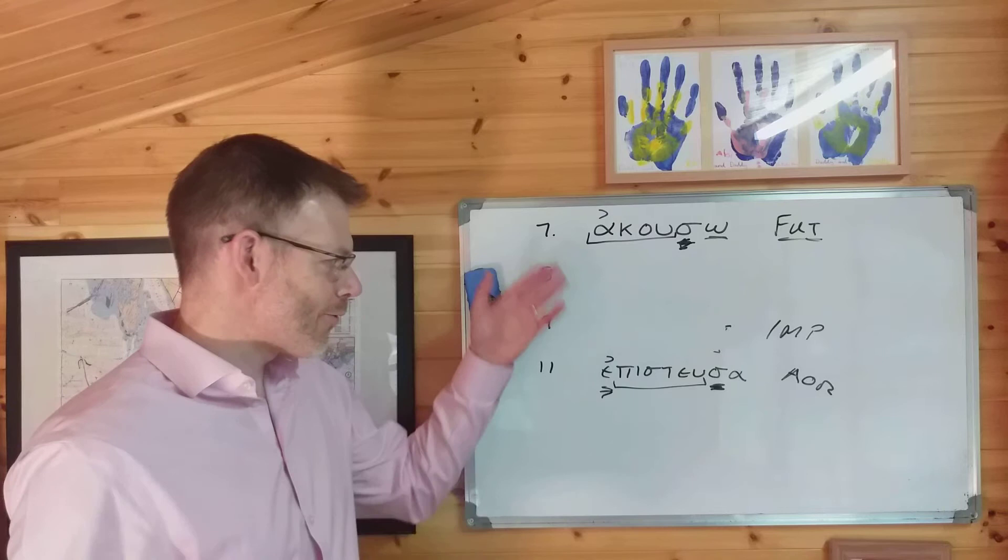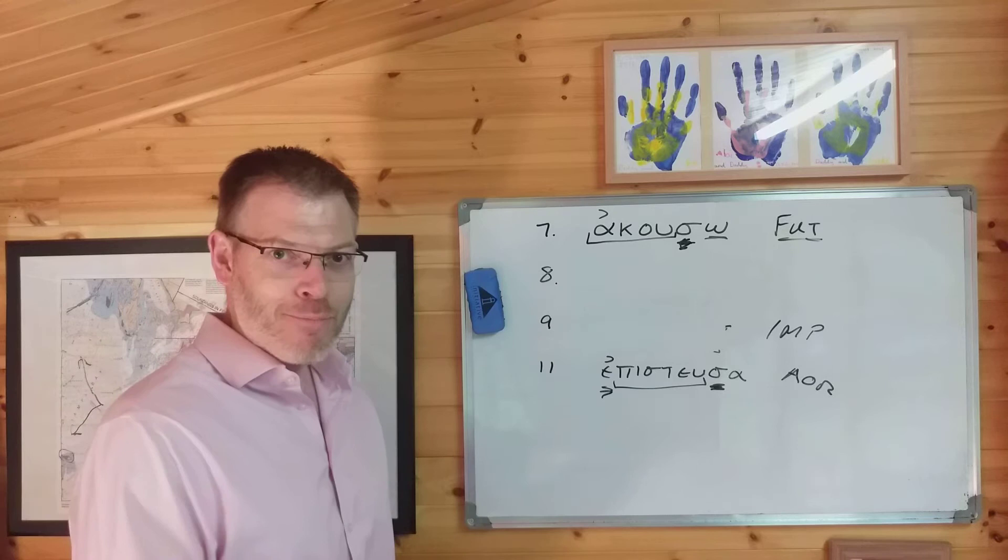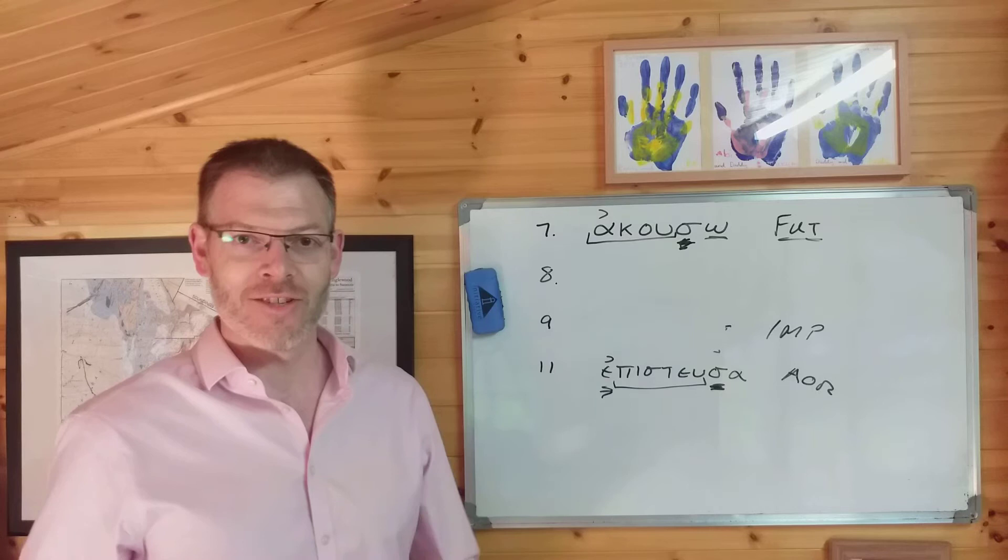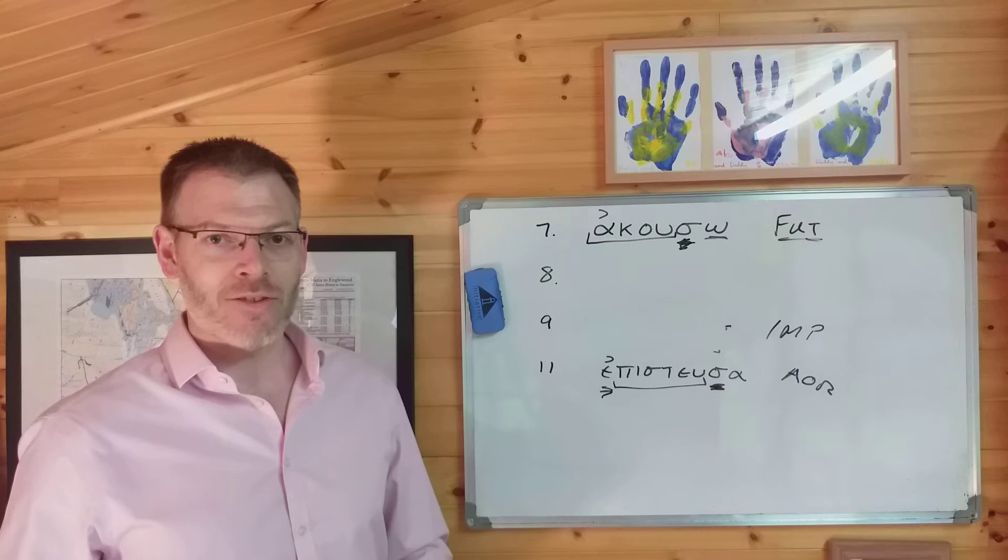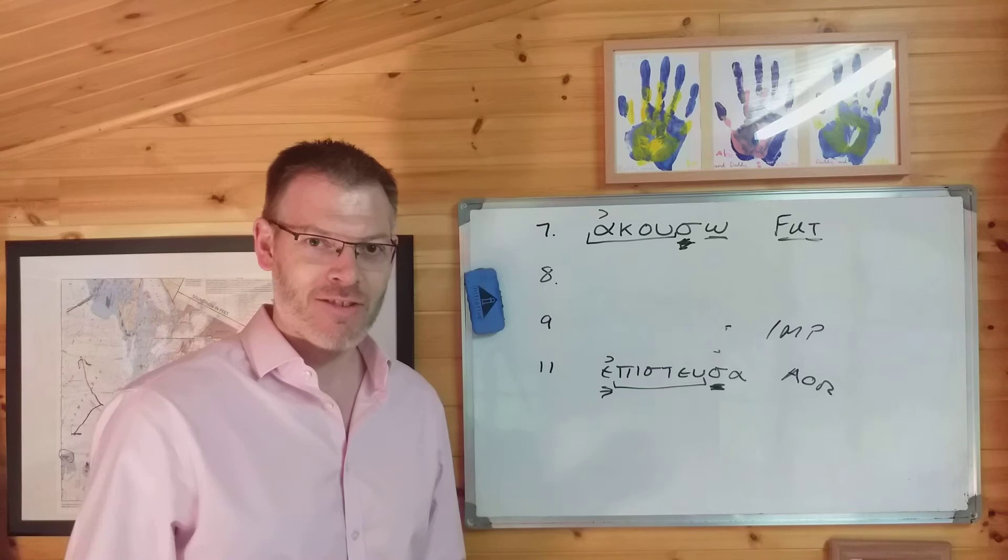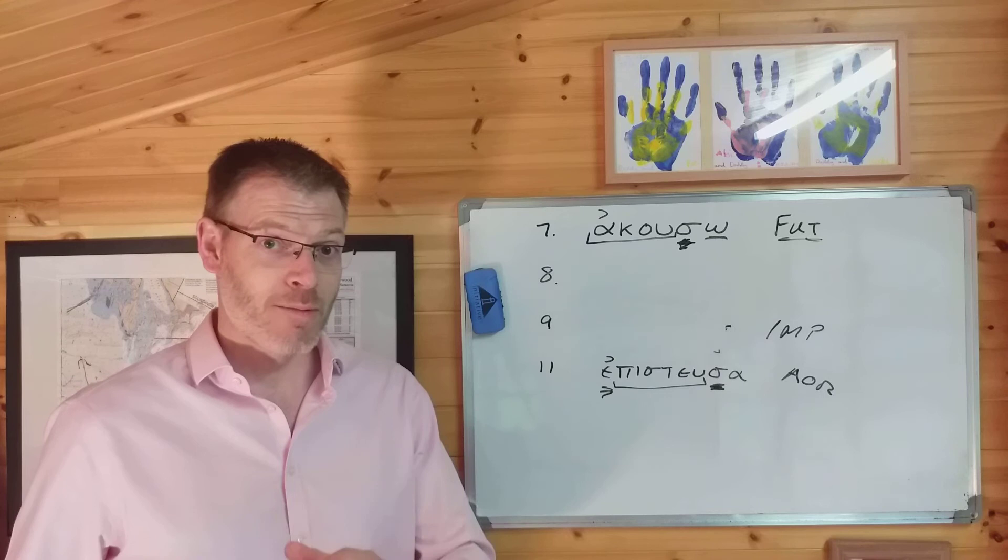What we're going to do next is to fill in the endings of the other three tenses. You know the present endings already. You don't yet know the future, the imperfect or the aorist, although actually you do, because there's a great bit of good news at the beginning of the next video. Tune in next time as we start in section 6.4, looking at the endings. But for now, 20 minutes a day, 30 minutes a day, five, six days a week, we'll have you reading the New Testament in Greek in no time at all. God bless. Bye for now.